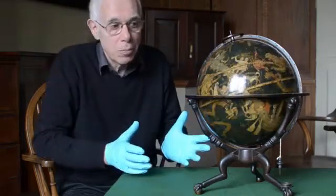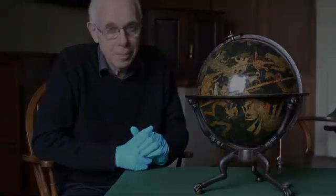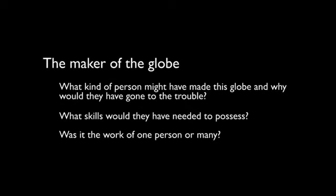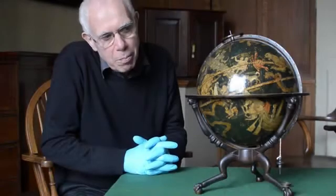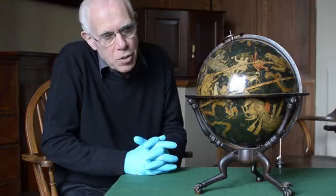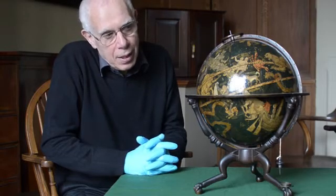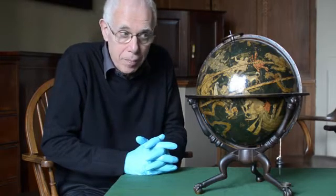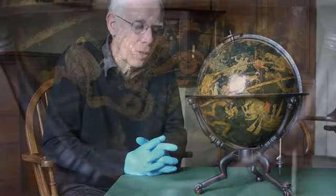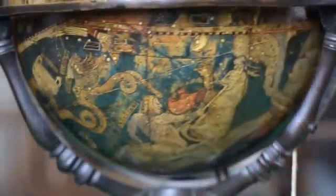So what about that workshop? Who made this globe? This globe was made by one of the most famous astronomers of his time, a man called Johan Schoener, who lived and worked and taught and made things in Nuremberg.